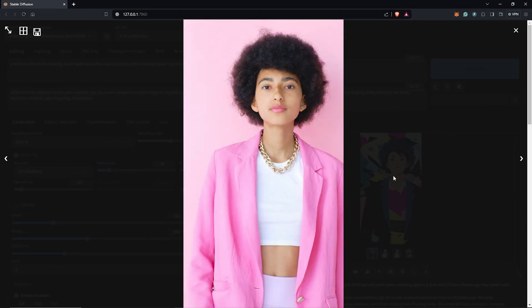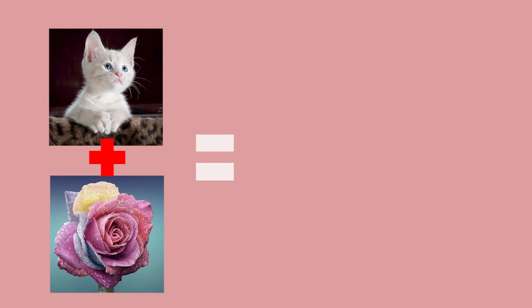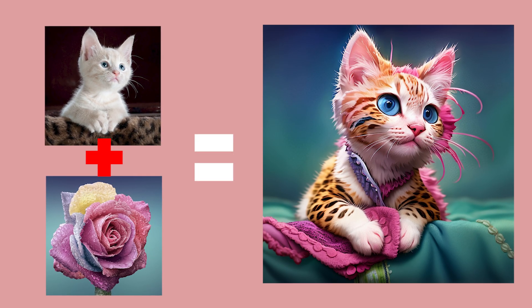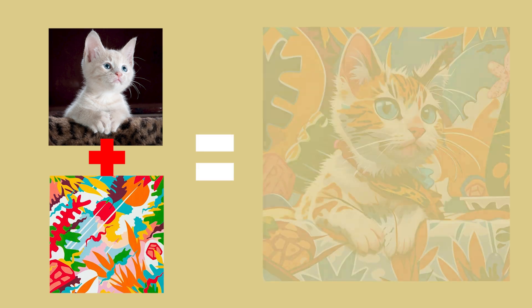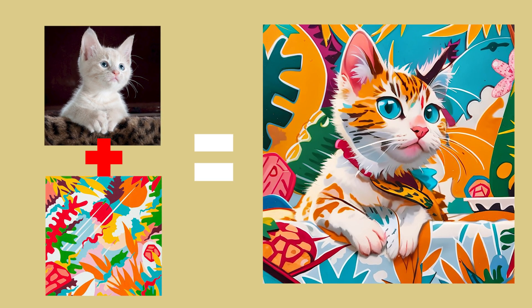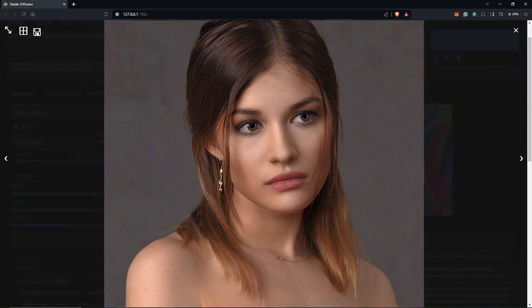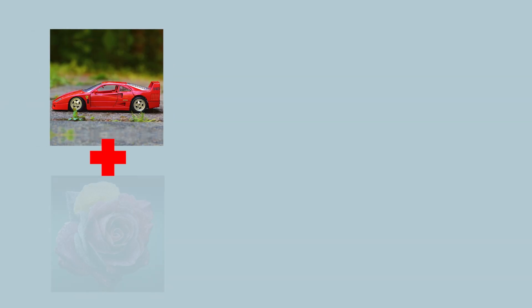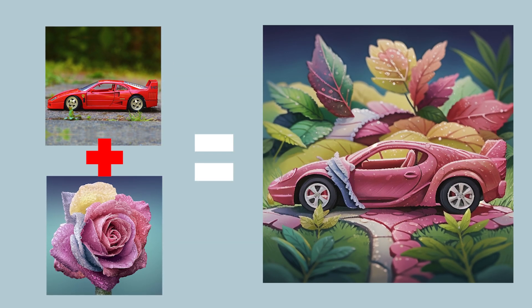With an IP adapter you can easily style your images in Stable Diffusion. IP adapter is an additional model to ControlNet which uses an image input as a prompt or style, unlike text-based prompting. This video will demonstrate how to style your images with a few examples.